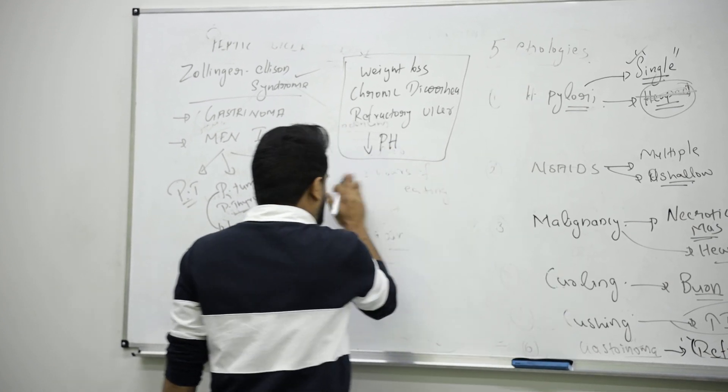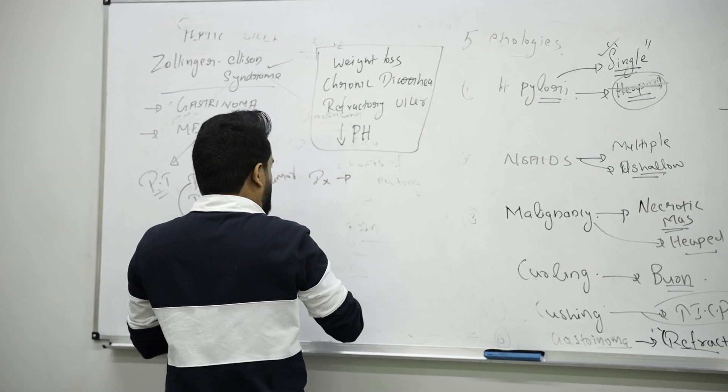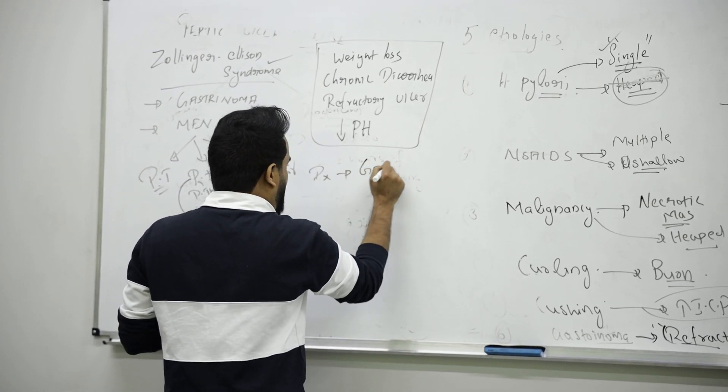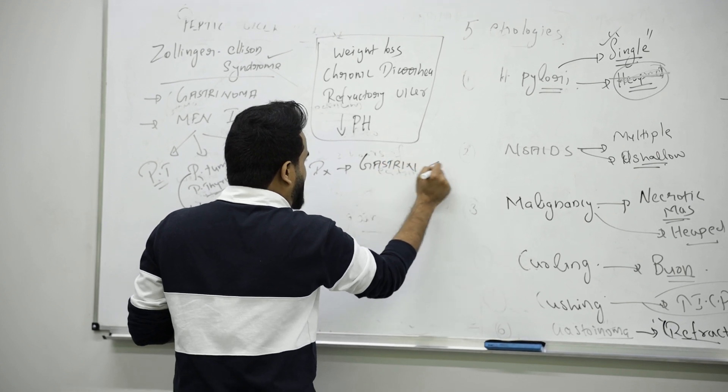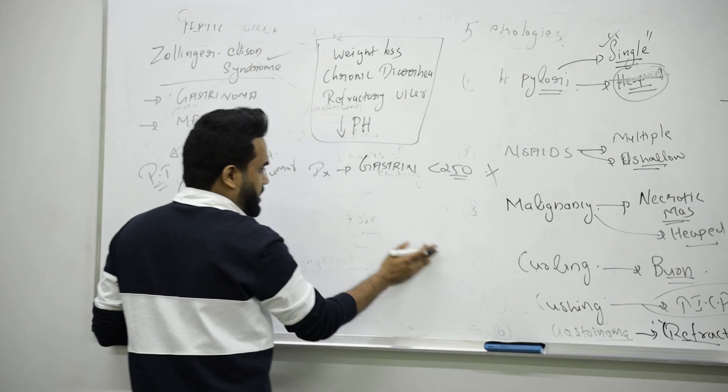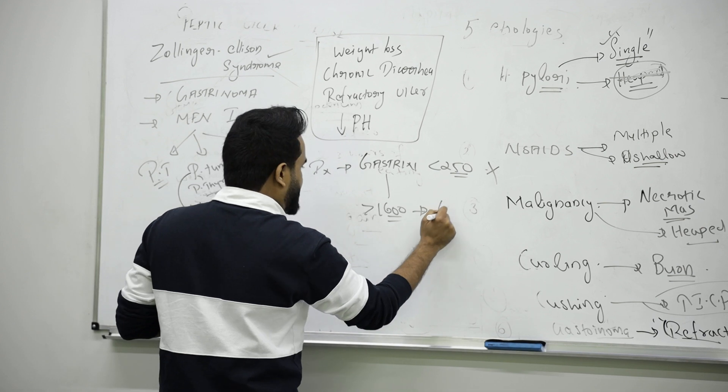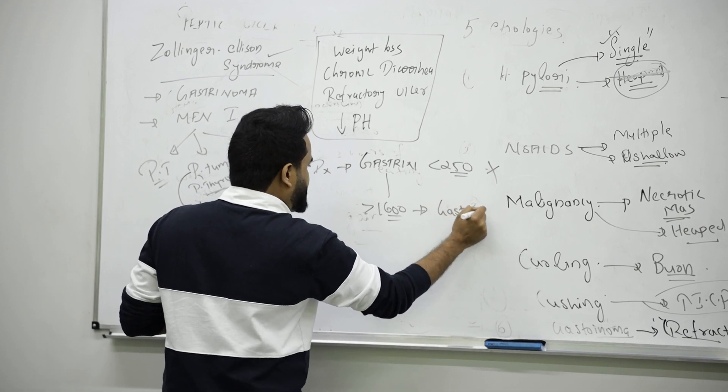For diagnosing, we check the level of gastrin. If gastrin is less than 250, it's not gastrinoma, it's not the disease. But if it is more than 1600, you confirm the patient has gastrinoma or Zollinger-Ellison syndrome.